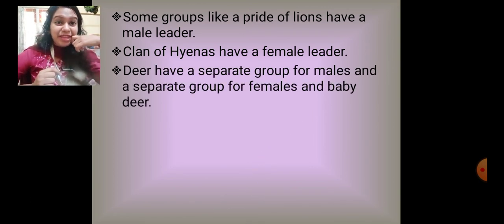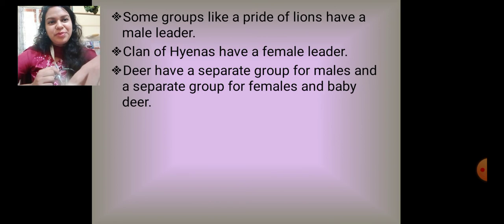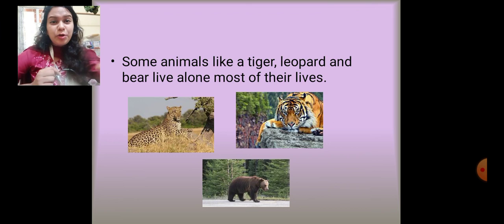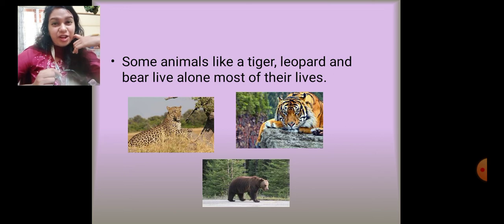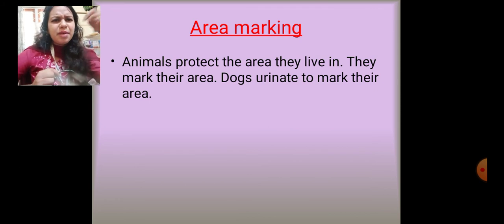Deer have a separate group for males and a separate group for females and baby deer — the boys and girls live separately. However, some animals like tiger, leopard, and bear do not like having friends at all. They like living their own life. The leopard sits alone in his majestic glory, the tiger likes living alone, and the bear is the same — they are all animals who prefer living alone.